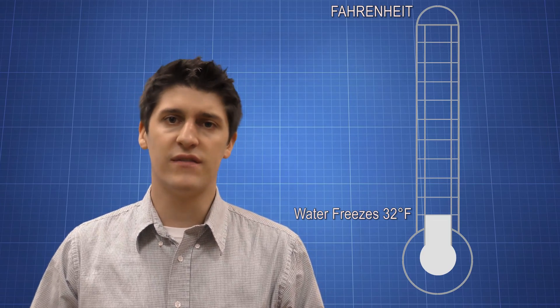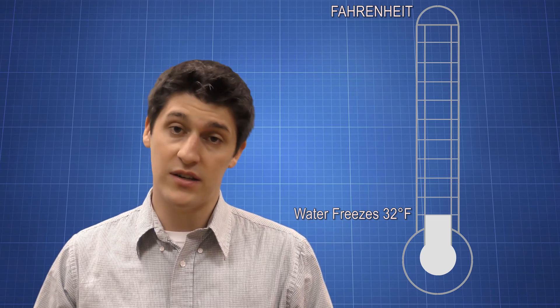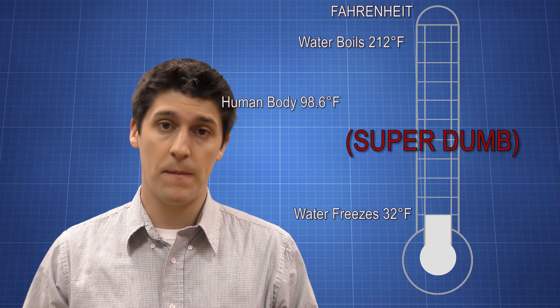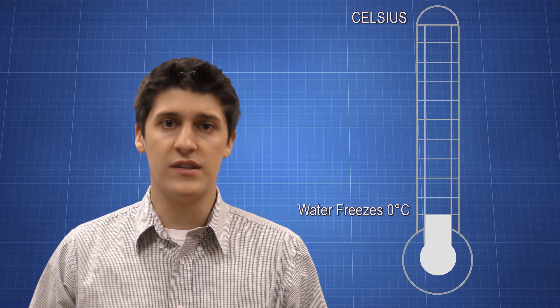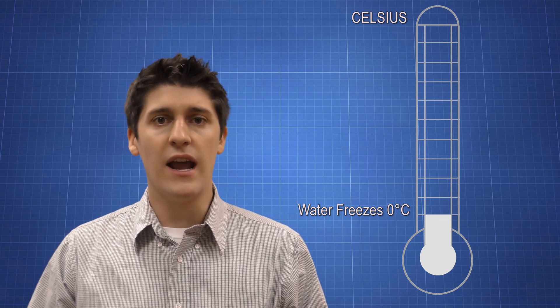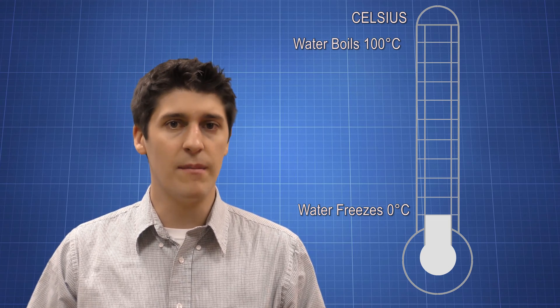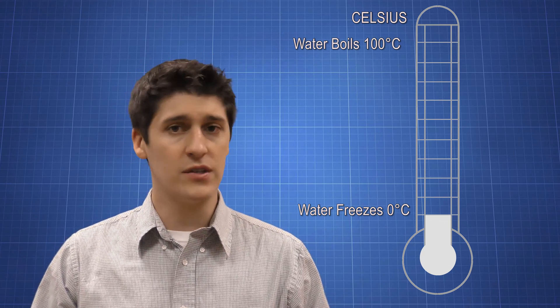In Fahrenheit, water freezes at 32 degrees Fahrenheit and it boils at 212 degrees Fahrenheit. In the Celsius system, which is based off of the changing points of water, zero degrees Celsius is the freezing point and 100 degrees Celsius is the melting point. Makes a lot more sense.